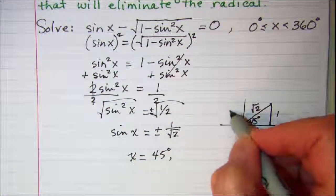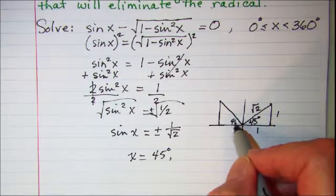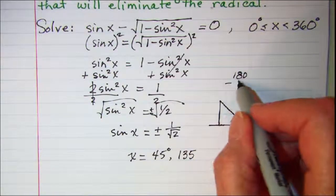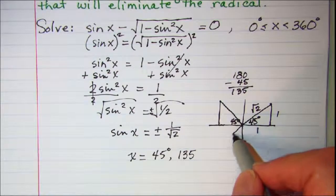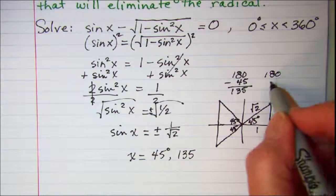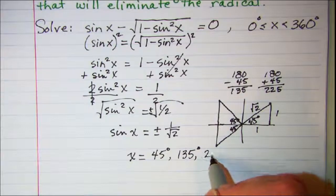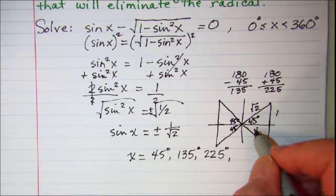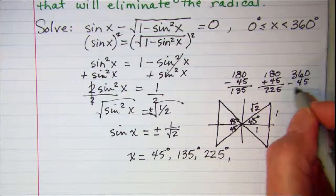In quadrant 2, the angle with a 45-degree reference angle is 135, found by taking 180 minus 45. The angle in quadrant 3 is 180 plus 45, which is 225. And the reference triangle in quadrant 4 is 360 minus 45, which is 315.